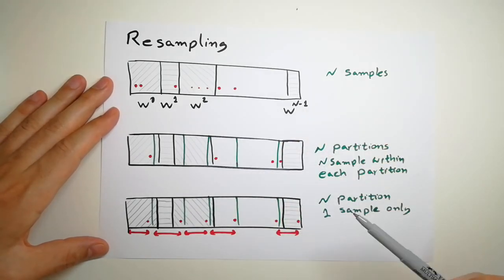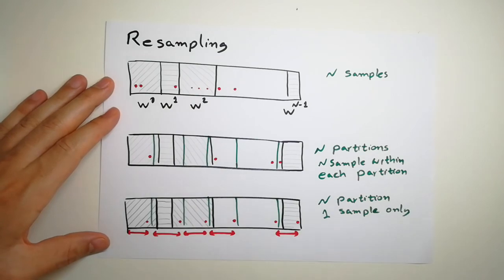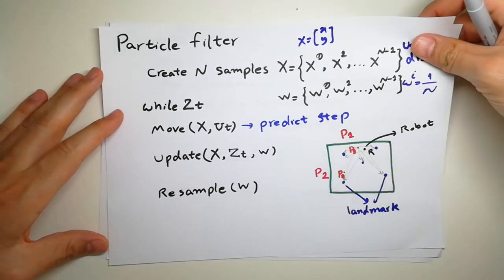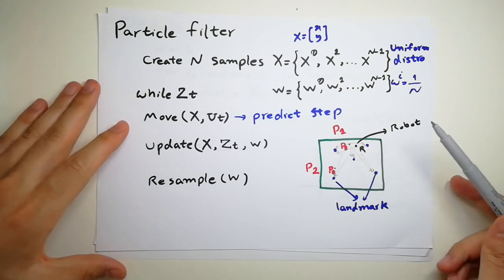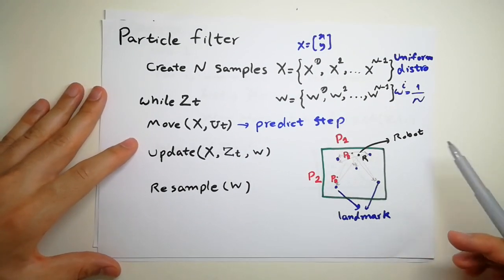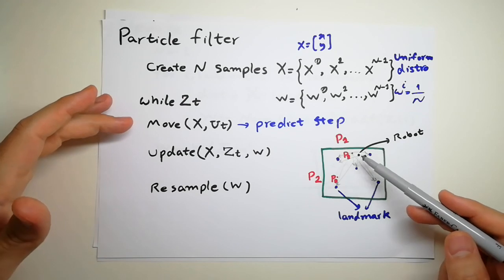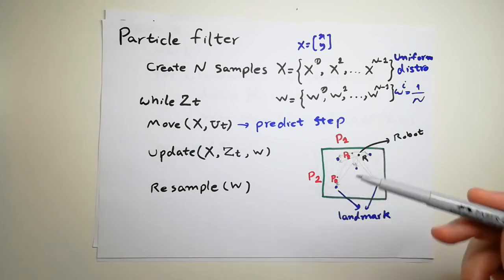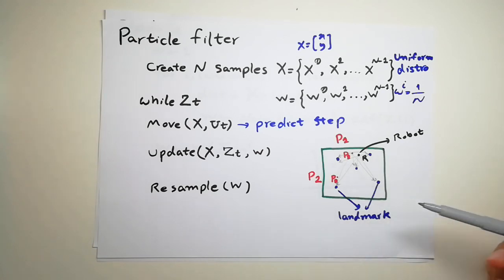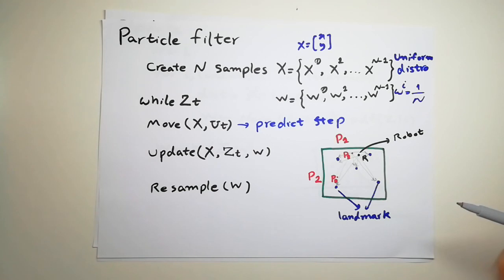After this step, particles around the real robot get selected more and more. We repeat the loop: move the robot, add some noise after moving because movement always has uncertainty, do the measurement update, and repeat. Please have a look at my Python code — it gives you a better insight. Thank you.